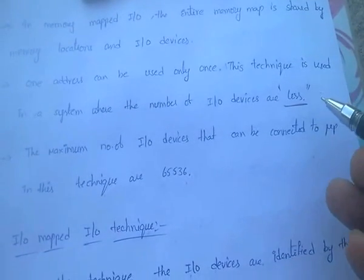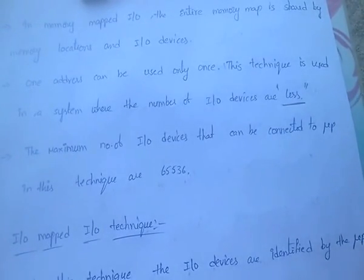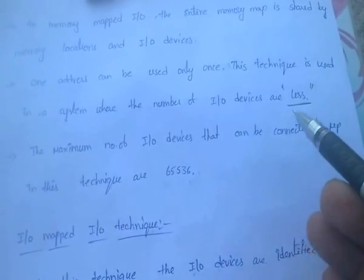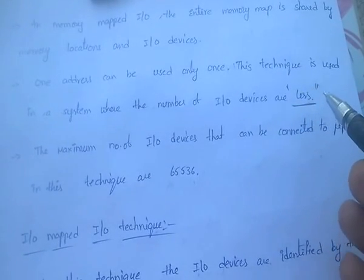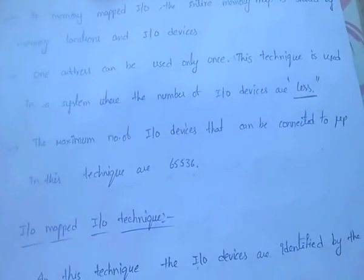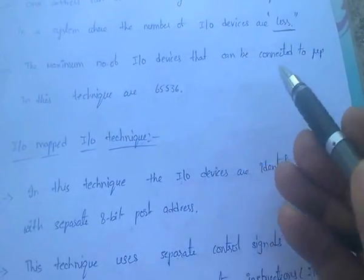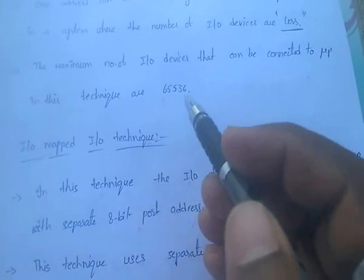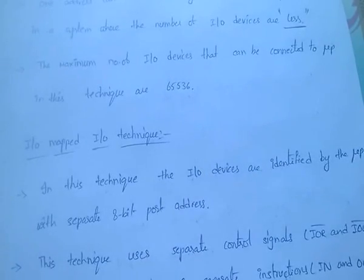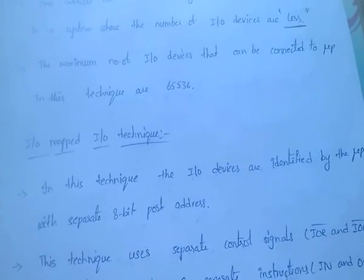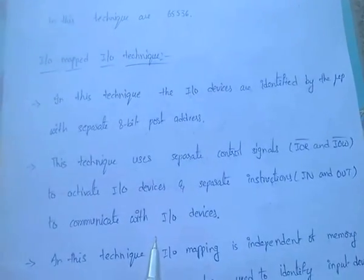In case of I/O mapped I/O technique, that technique is used in a system where the number of input output devices are very high. The maximum number of I/O devices that can be connected to the microprocessor in the memory mapped I/O technique are 65,536.